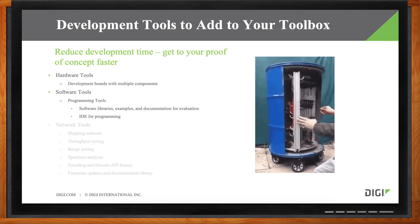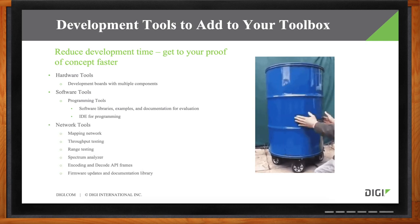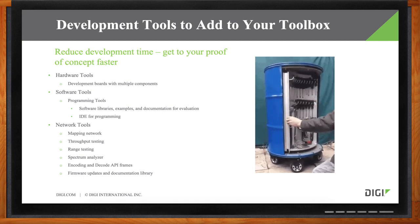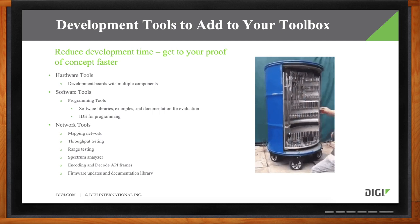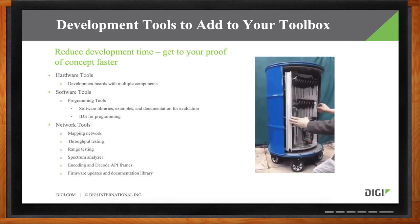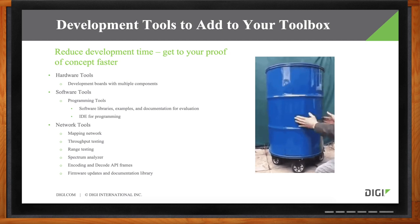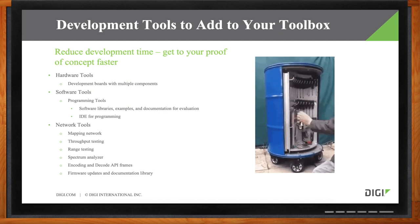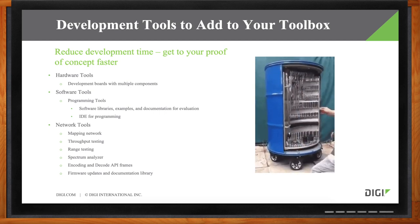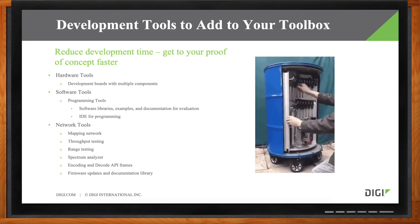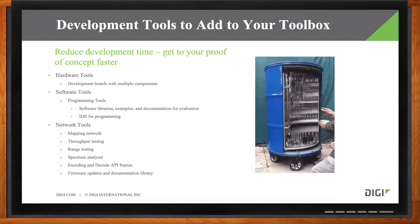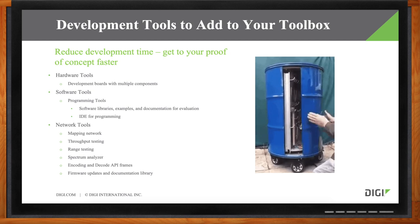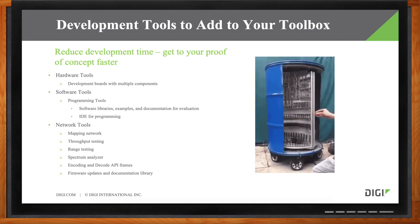If you're looking to add wireless to your product, network tools are really important to map the unseen. Wireless communicates over electromagnetic waves you can't see like a wave in the ocean. You need technologies that allow you to map the network, show where different nodes are, and show the range and signal strength between nodes. Other important things are throughput testing, knowing how much data you're sending over those nodes. On top of that, a spectrum analyzer lets you see how much noise is in a certain environment to make sure it doesn't drown out wireless communications. Finally, you want a firmware update and documentation library to track all changes made on a module.